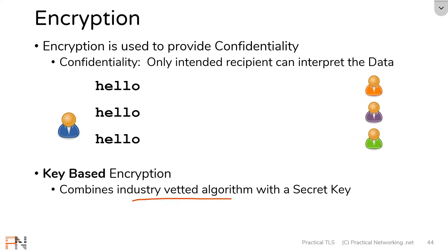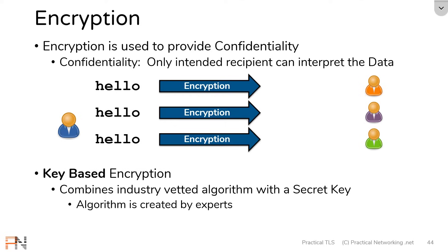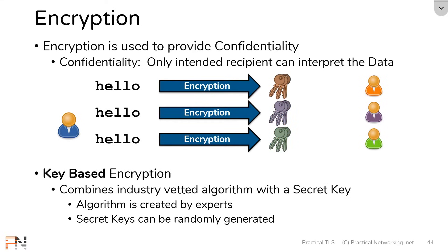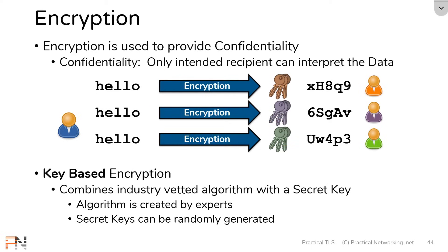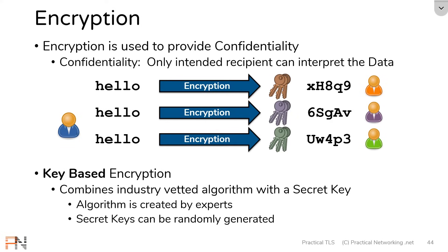Key-based encryption combines a publicly vetted algorithm with a secret key. The algorithm itself is created by mathematicians and cryptographers, and it's vetted by each other to make sure the algorithms are secure. The secret key is just a random set of ones and zeros. Even though I'm using the same word to all three users and the exact same protocol, because I've generated randomly new keys for each user, the ciphertext on the wire will look completely unique. The orange user has zero insight into what was sent to the purple user, and vice versa. This is what allows encryption to scale to the whole internet.